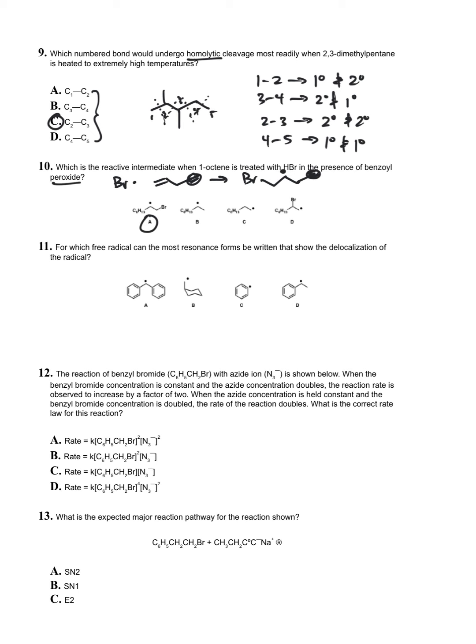Question eleven: for which free radical can the most resonance forms be written that show delocalization of the radical? This is going to be A. A, we have a benzylic radical. B is a primary radical. C is bad, that's sp2. D is benzylic, but there's only one benzene ring. So A is going to win out.